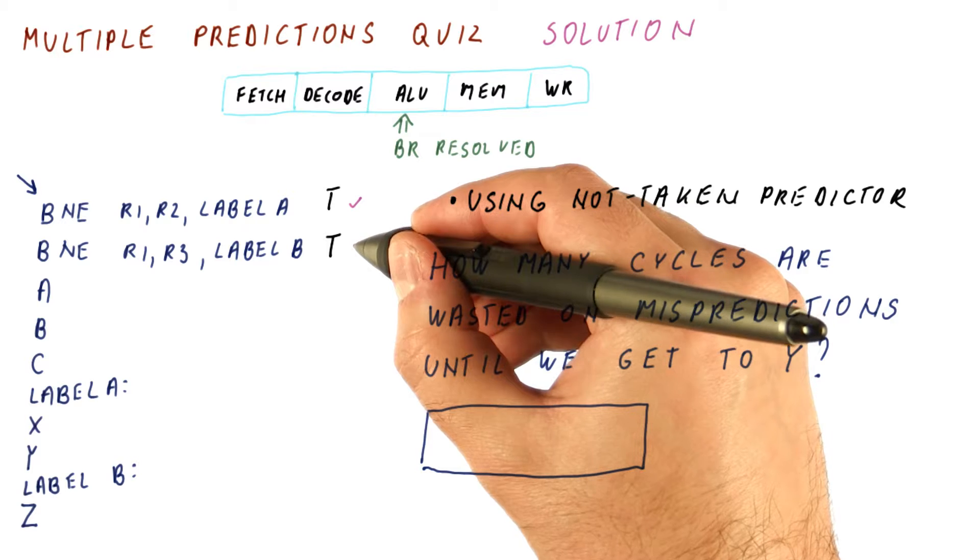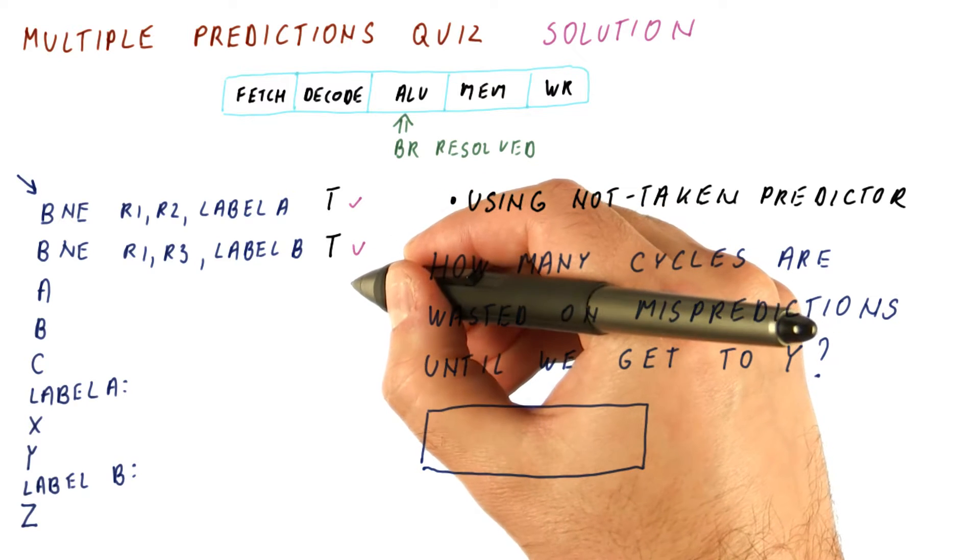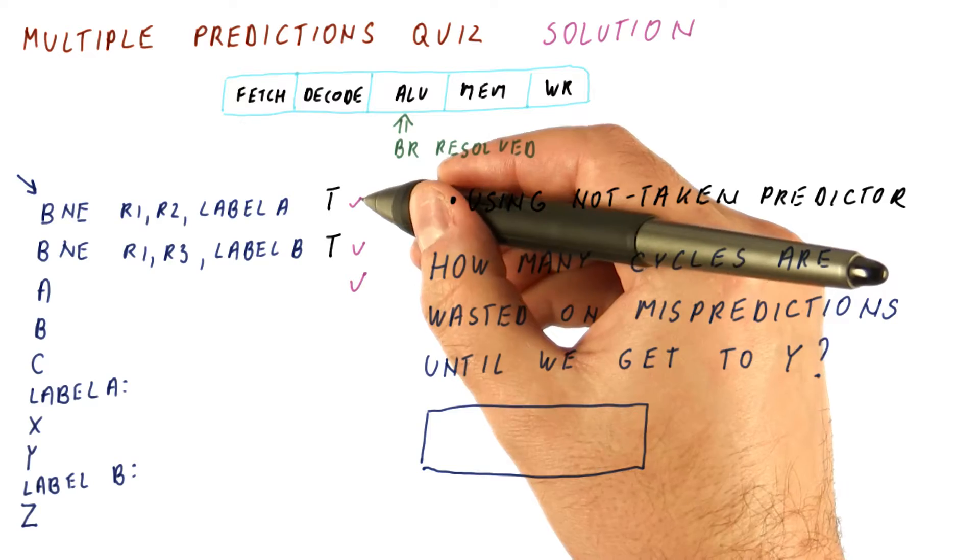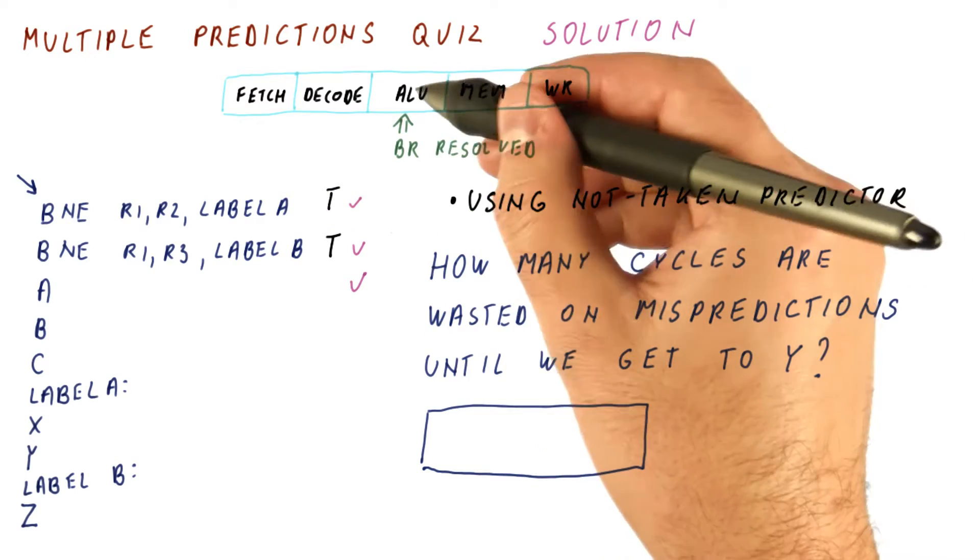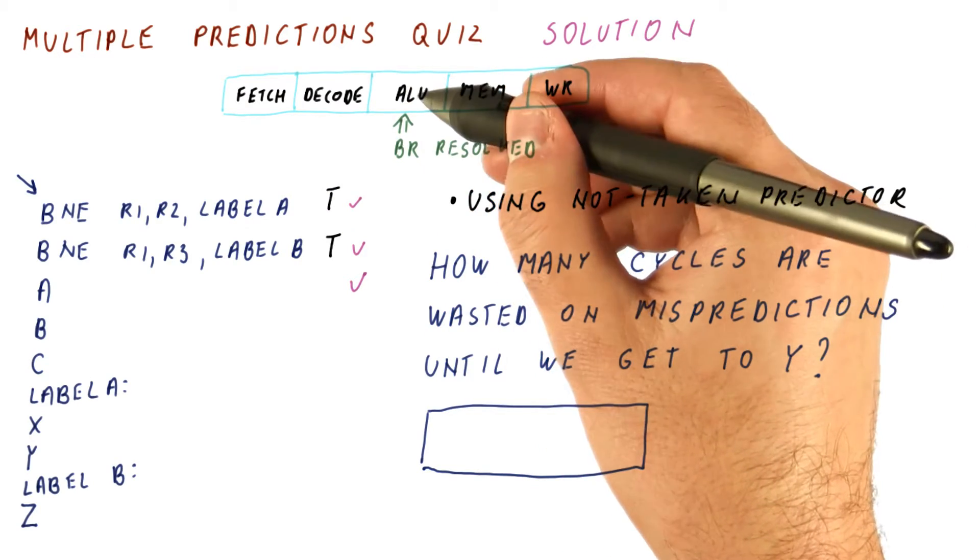and then we will fetch this, and then we will fetch this. And at that point, this branch will be here and be resolved.